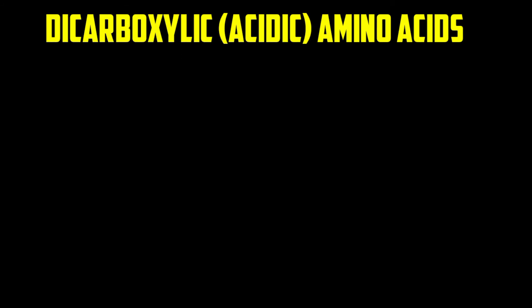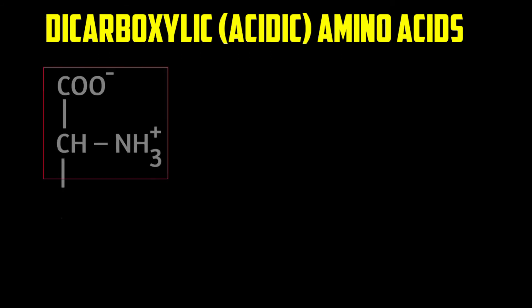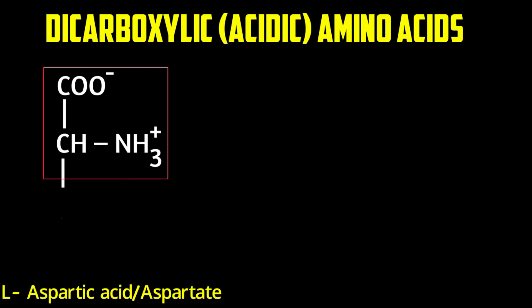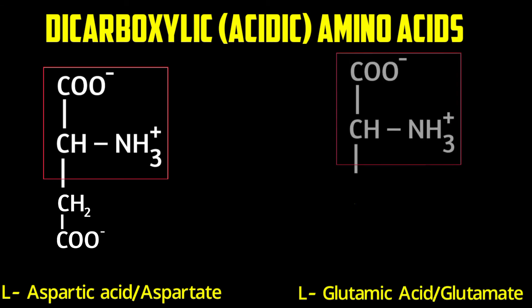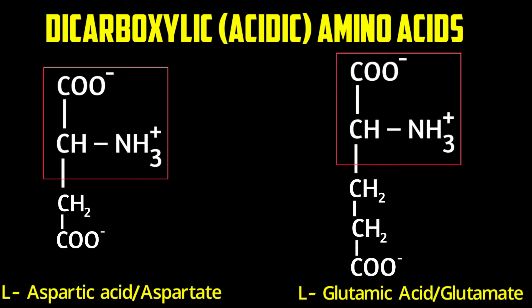Dicarboxylate amino acids have two members: aspartic acid (aspartate) and glutamic acid (glutamate). For aspartic acid, add one carbon and add a carboxyl group (COO-). For glutamic acid, draw the general amino formula, add two carbons, then add COO- — that is glutamic acid or glutamate.